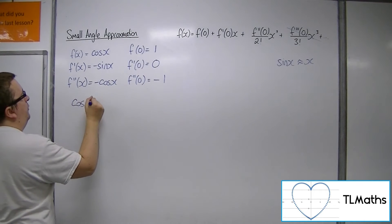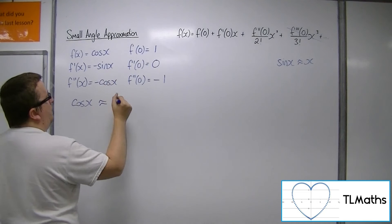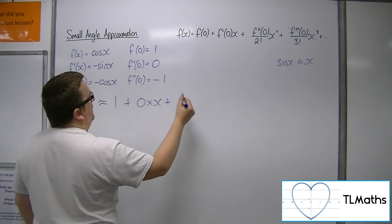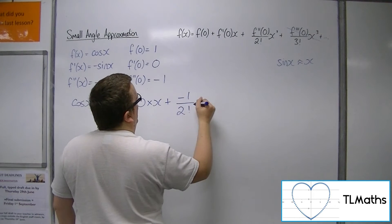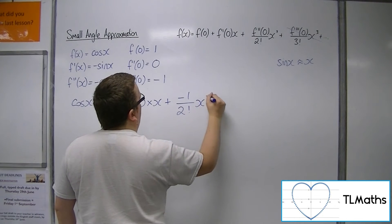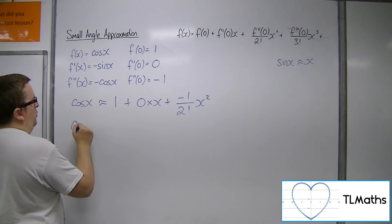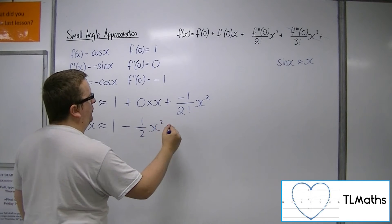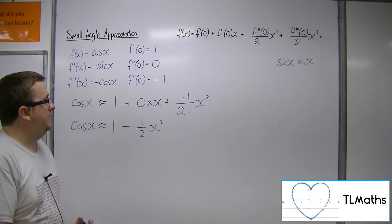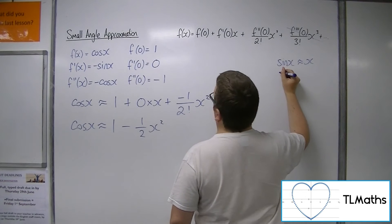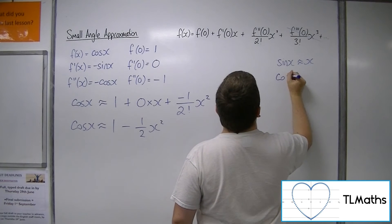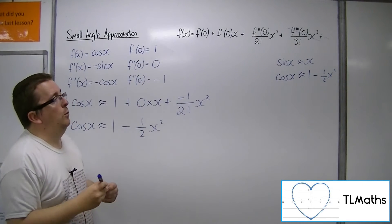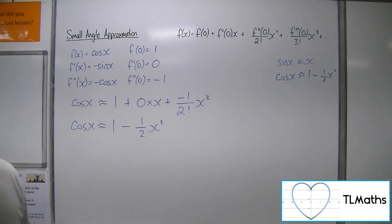So, cosine of x will be approximately f of 0, plus f prime of 0 times x, plus f double prime of 0 over 2 factorial x squared. And so, cos x is approximately 1 minus half x squared. Or, cos of theta is approximately 1 minus half theta squared. Precisely the same small angle approximation as we got in the previous video geometrically.